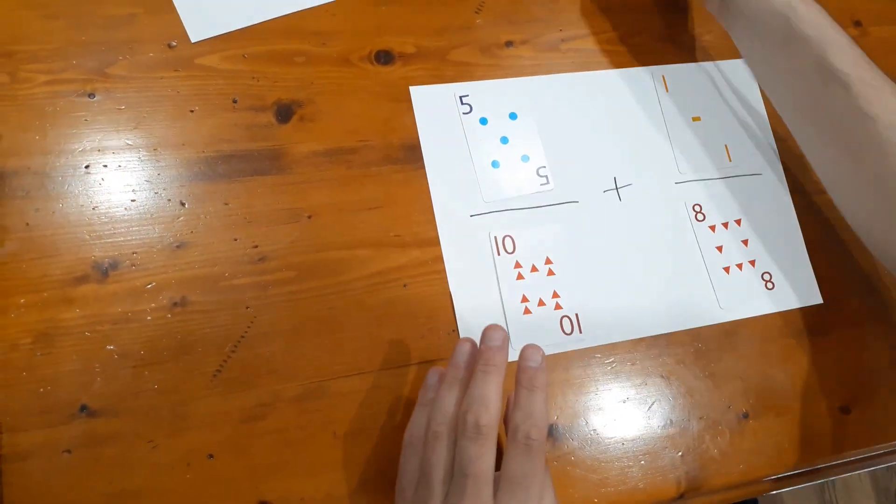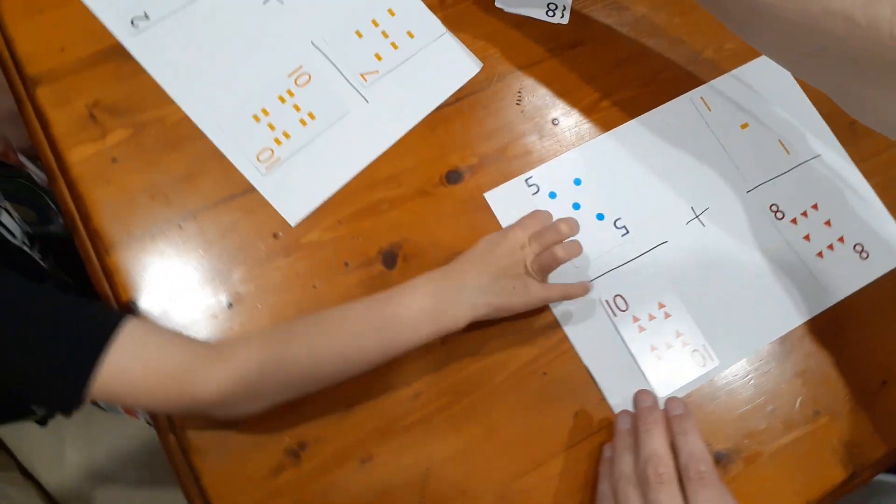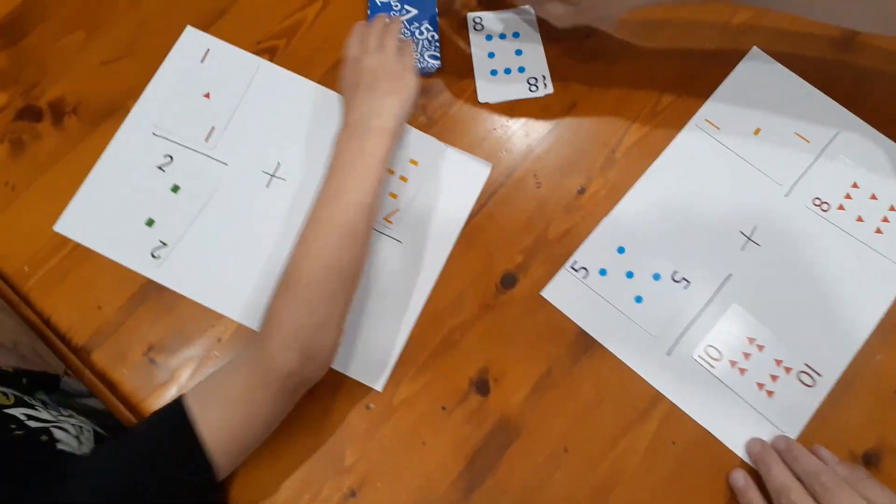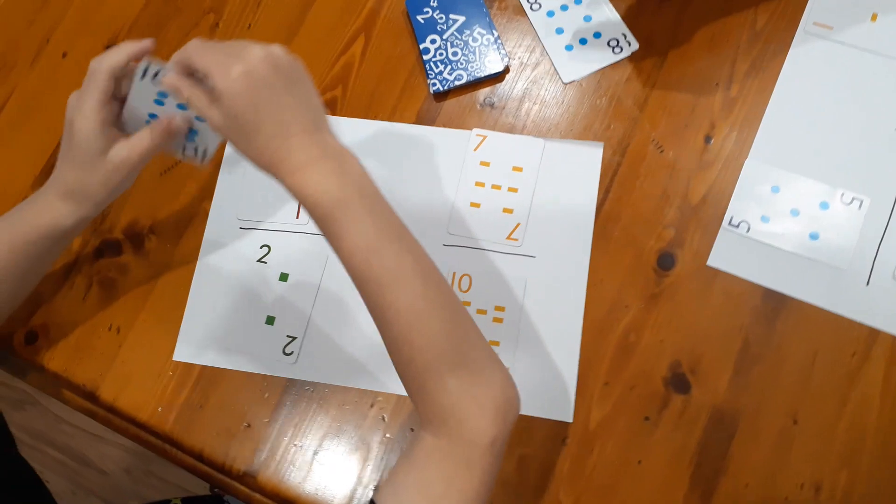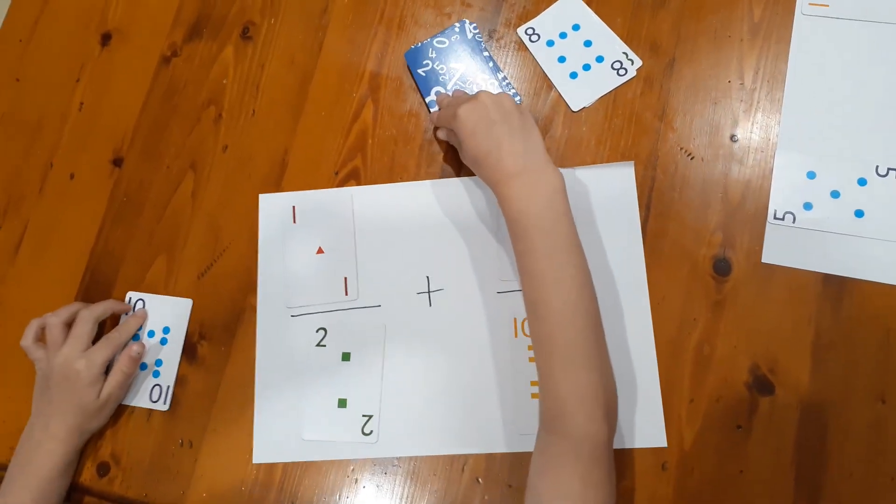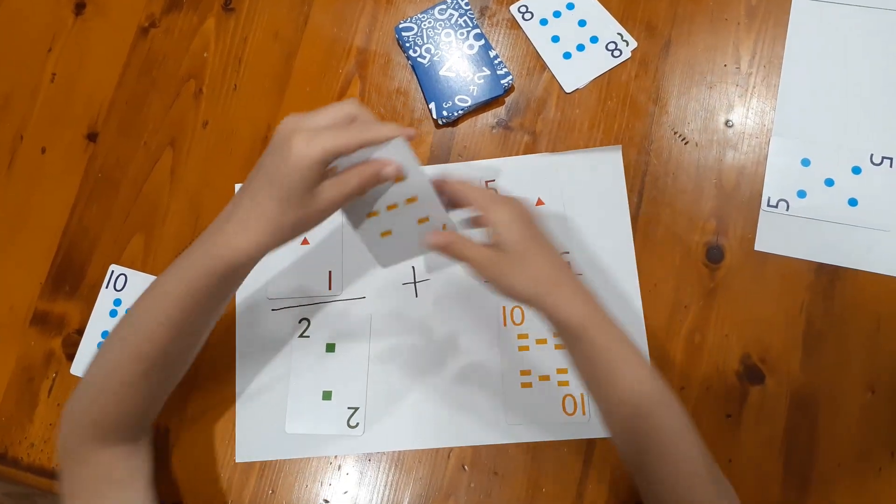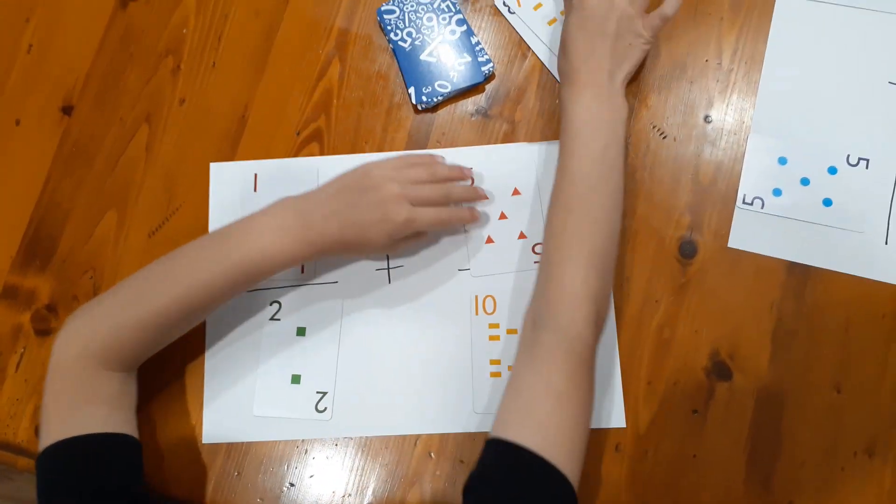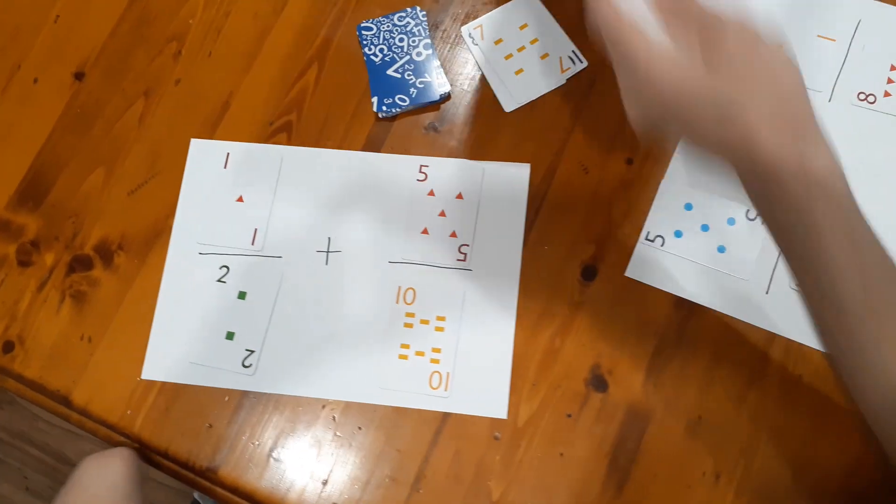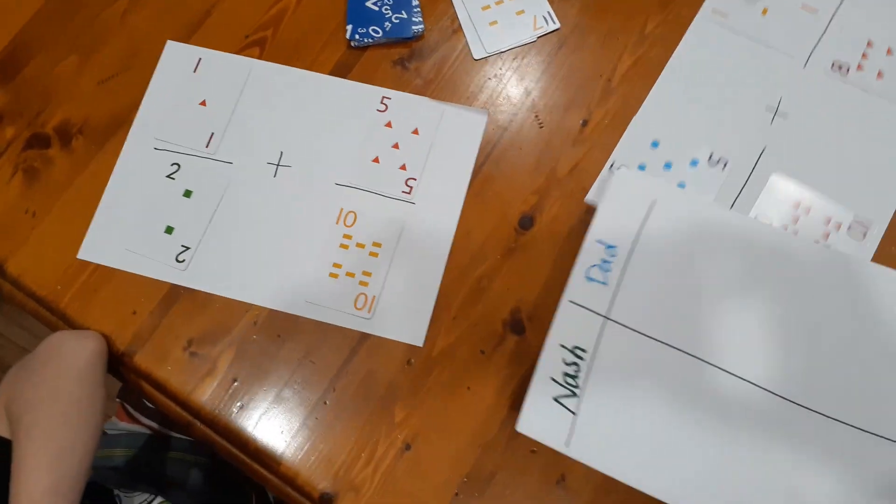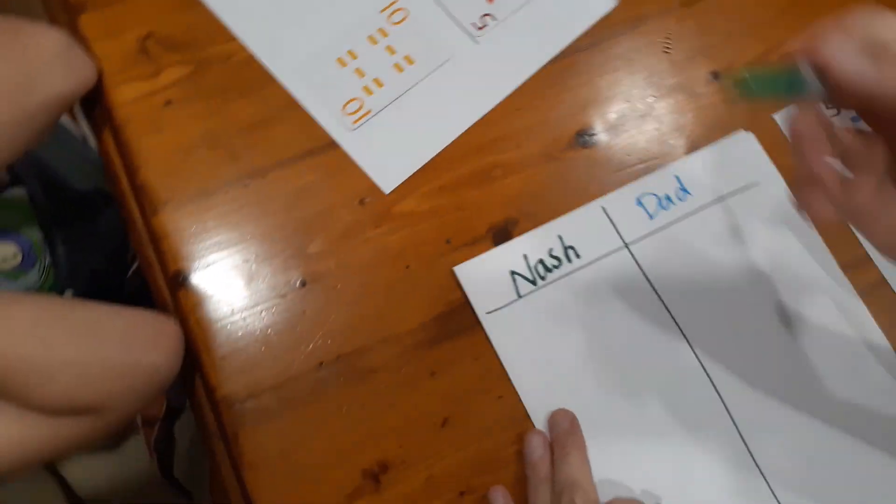So I'm going to swap that for that, and I'm going to put those two cards into the discard pile. Now on Nash's turn, he can take two cards from there if he wants that card. He can also grab that. Okay, put those in the discard pile.